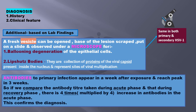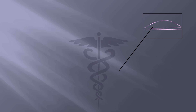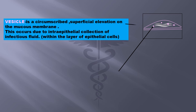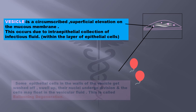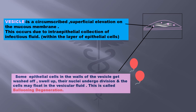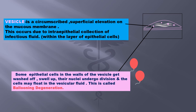Two new terms introduced here are vesicle and ballooning degeneration. A vesicle is a circumscribed superficial elevation on the mucous membrane with intraepithelial collection of infectious fluid. Intraepithelial means within the layers of the epithelial cells. Some epithelial cells in the wall of the vesicle get washed off, swell up, the nuclei undergo division, and the cell may float in the vesicular fluid. This is called ballooning degeneration, which can be seen under a microscope.